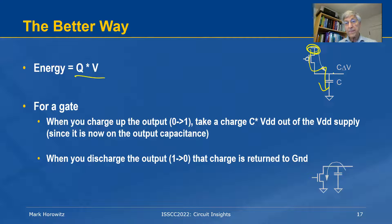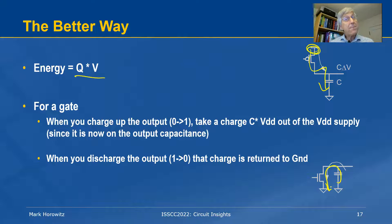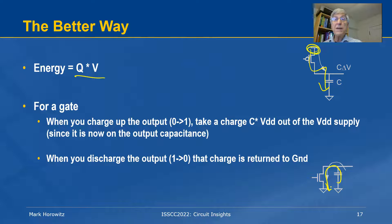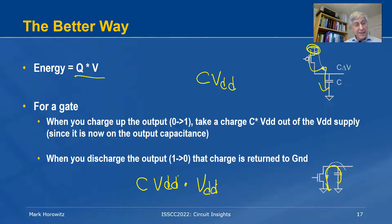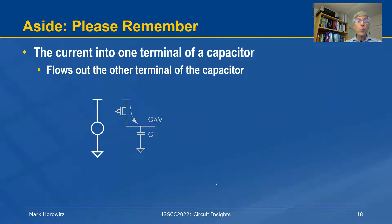Similarly, when I discharge that node, I'm not putting the charge back on the power supply — though there are clever ways to do that. So at the end of the cycle, I've moved a unit of charge equal to C·V_DD from V_DD to ground. That takes an energy equal to C·V_DD — the charge moved — times the voltage V_DD, giving C·V_DD².